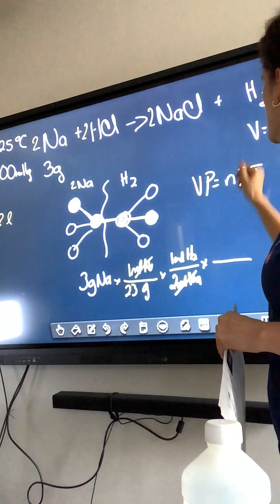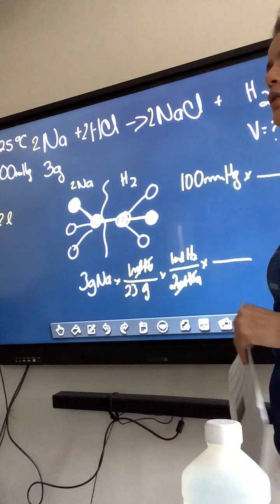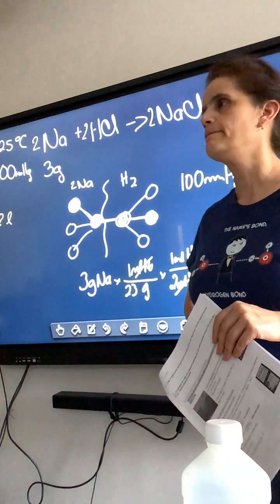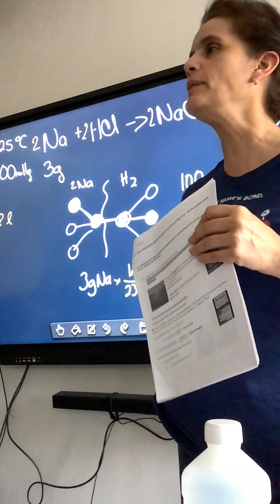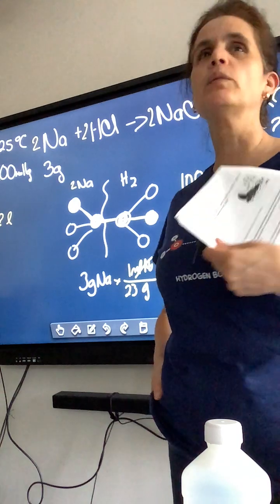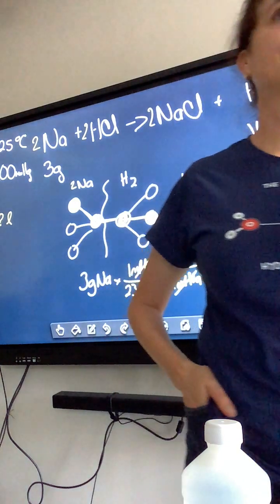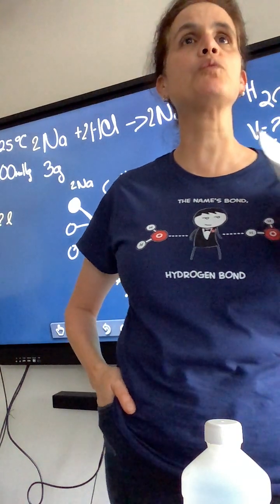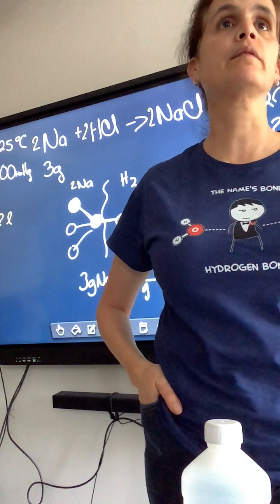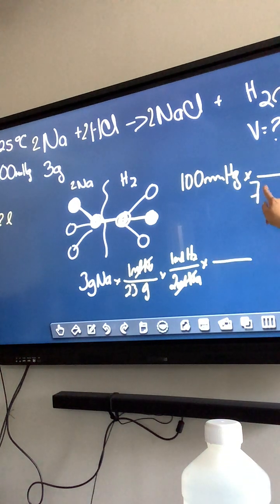Pressure is 100 millimeters of mercury. I don't want to write that, I want to write it in the units that are liters atmospheres mole or kelvin. So I am not going to write 100 millimeters of mercury, I am going to convert those 100 millimeters of mercury to atmospheres. How many millimeters of mercury are one atmosphere? 760. So that is my conversion factor. 760 millimeters of mercury are one atmosphere.